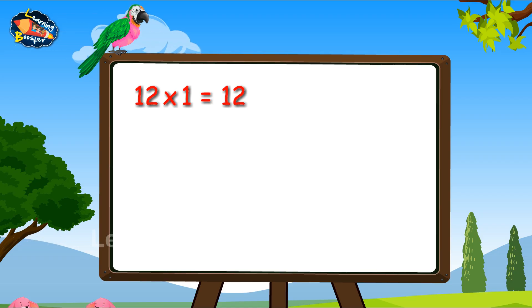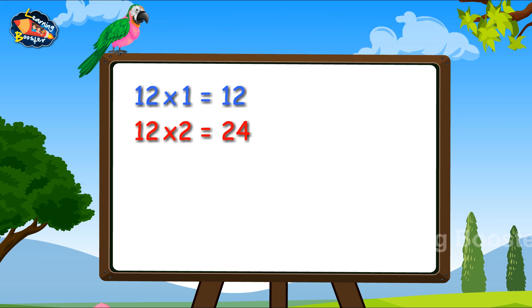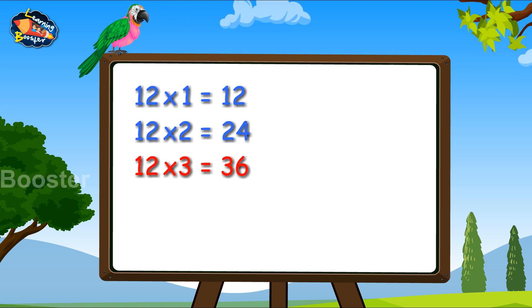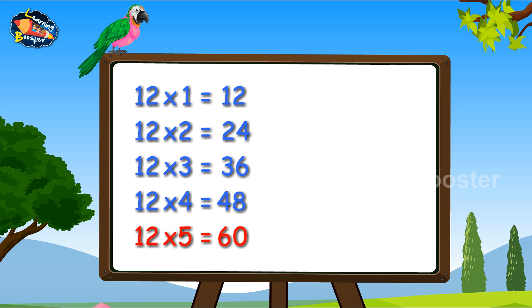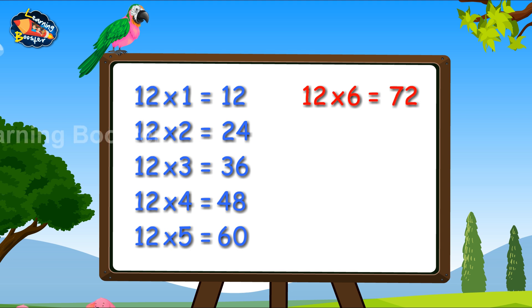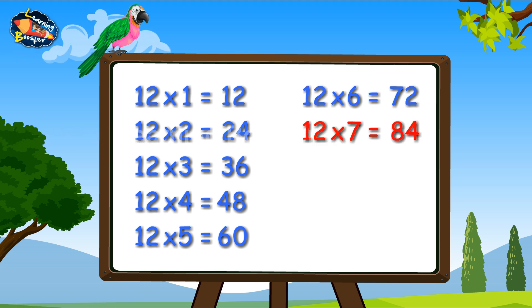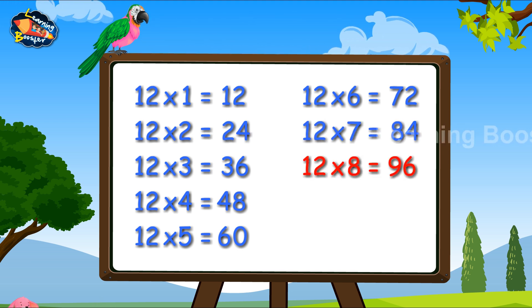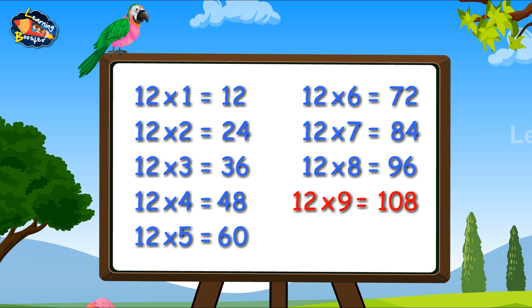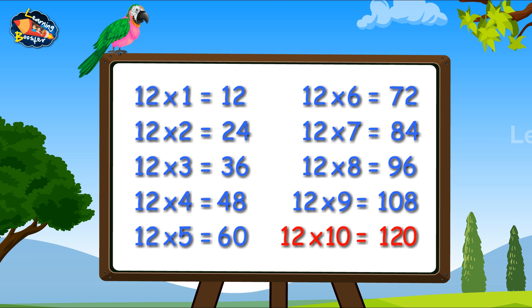Twelve ones are twelve. Twelve twos are twenty-four. Twelve threes are thirty-six. Twelve fours are forty-eight. Twelve fives are sixty. Twelve sixes are seventy-two. Twelve sevens are eighty-four. Twelve eights are ninety-six. 12, 9's are 108. 12, 10's are 120.